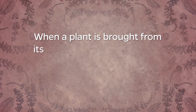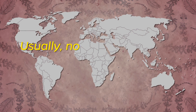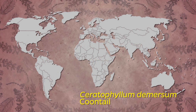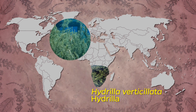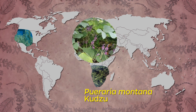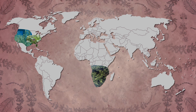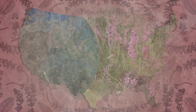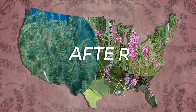When a plant is brought from its original historic range and introduced to a new area, it's known as a non-native plant. Usually, non-native refers to plants from other countries, regions, or continents. Our native coontail plants are non-native to South Africa. Hydrilla from Southeast Asia is non-native to the United States. Kudzu, native to Asia and some Pacific islands, is non-native to the southern U.S. Purple loosestrife is native to Europe and Asia and non-native to the U.S. and Canada. About 50,000 plant species are non-native to the U.S., meaning they were introduced after European contact.